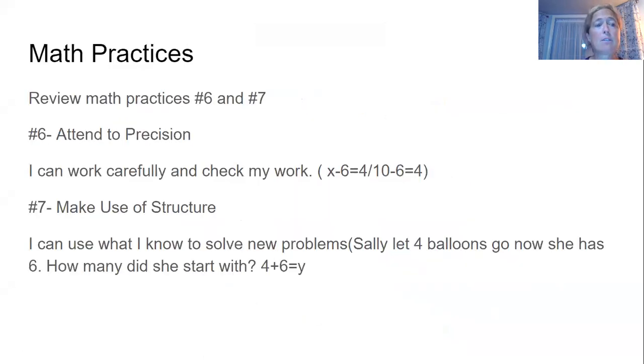But before we start that, I did want to review the next two math practices. Remember, we have these math practices so that we can become better mathematicians. Today we're talking about number six and number seven. Number six is to attend to precision. That means that I can work carefully and check my work. That means you're working carefully, neatly, and you're using math to check your answers. So if it's an addition problem, you can use subtraction to check your work and we'll be learning more about that as the year goes on.